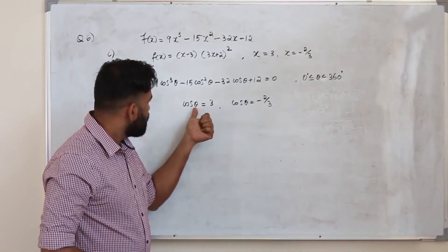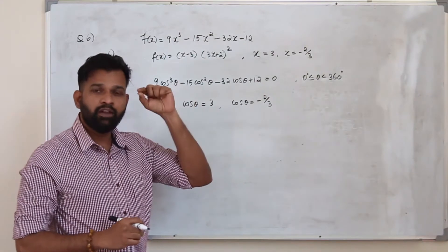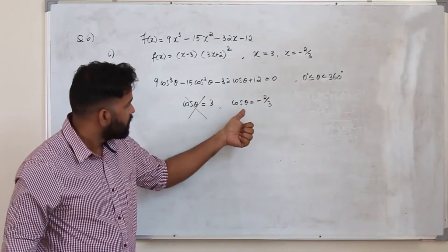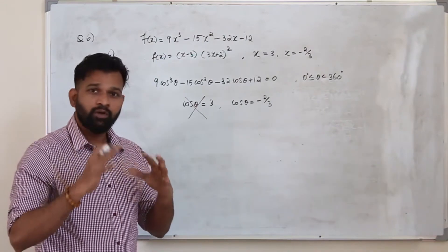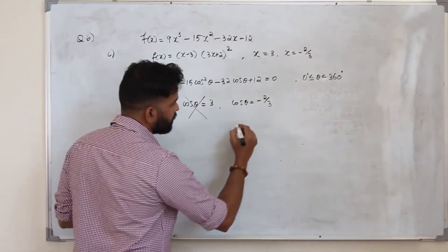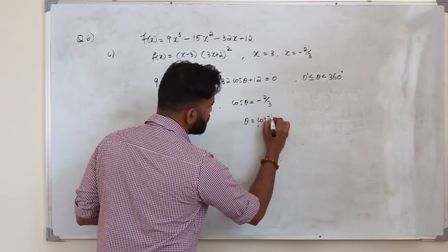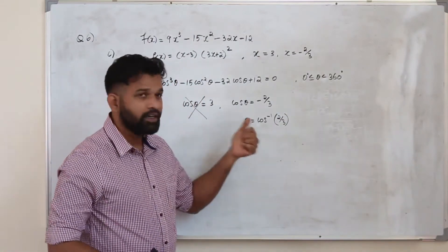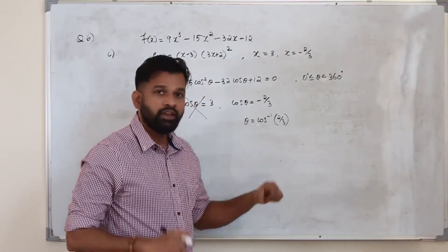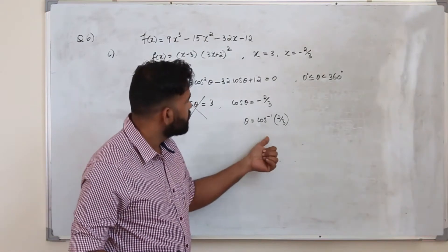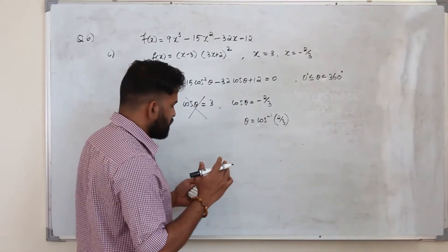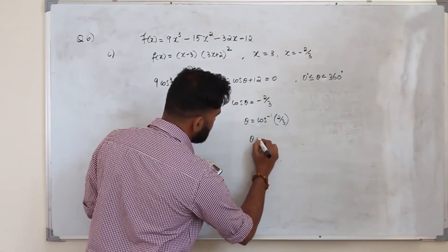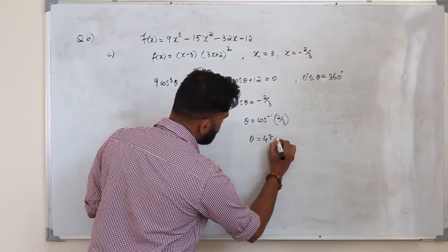Cos theta can never equal 3, since the maximum value of cos theta is 1 and the minimum is minus 1, so there is no solution for that equation. We consider only cos theta equals minus 2 over 3. Find the principal value: cos inverse of 2 over 3 (ignoring the negative sign), keeping the calculator in degree mode. The principal value is 48.189..., which rounds to 48.2 degrees.